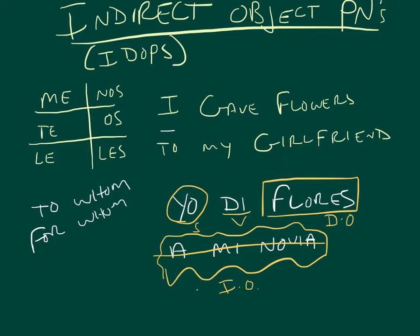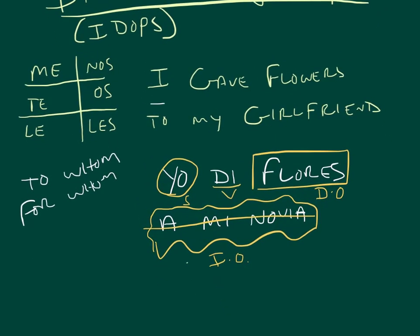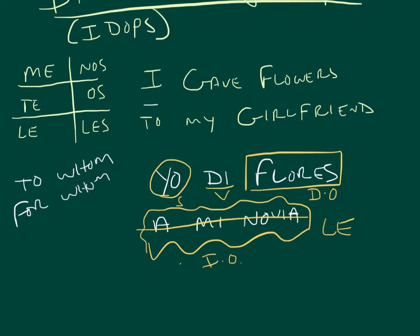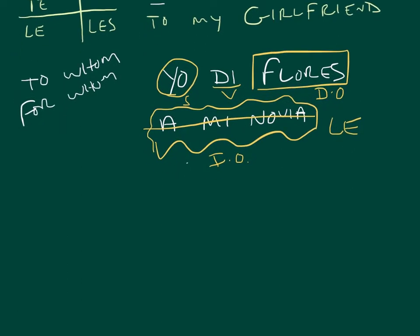And just like with the direct object pronouns, the indirect object pronoun goes, ready? Before the conjugated verb. Before the conjugated verb. So, I'm going to change that to le. And then I'm going to pick it up. So, I'm going to pick it up. And I'm going to write my whole sentence. And my whole sentence is going to say, yo le di flores. And that's it. It's just that simple. Yo le di flores.